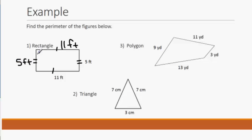So to find the perimeter of this rectangle, we can just add up the measures: 11 plus 5 plus 11 plus 5. It wouldn't matter how many sides our polygon has, we would just add up all of the sides. So 11 plus 5 is 16, plus 11 is 27, plus 5 is 32. So our perimeter is 32 feet.